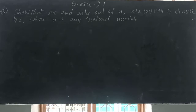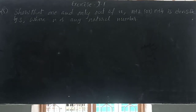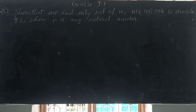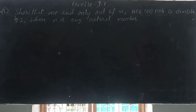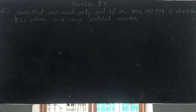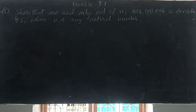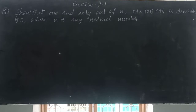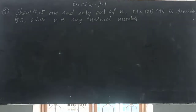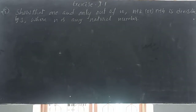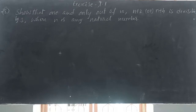What is the question? Show that one and only one of n, n plus 2, or n plus 4 is divisible by 3, where n is any natural number. So what the meaning is: in these three numbers, any one is divisible by 3.